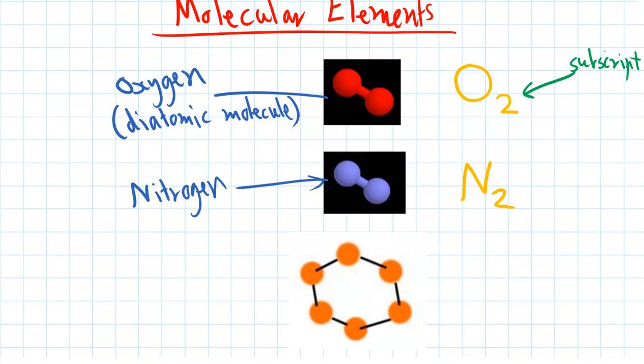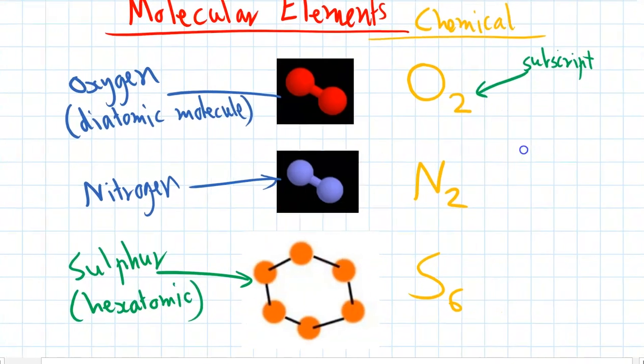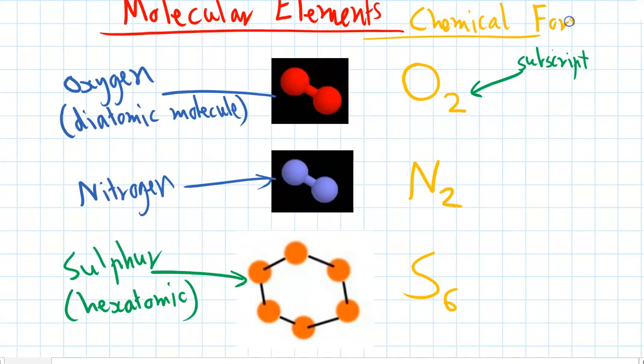Here's another one we've seen before. This is sulfur, but sulfur's most common form, if you get a chunk of it, is actually in a molecule with six atoms. So it's not diatomic, it's hexatomic. And that means to write the chemical formula of sulfur, we're going to need to write S6 to represent it has six atoms. So these are the chemical formulas of these elements.